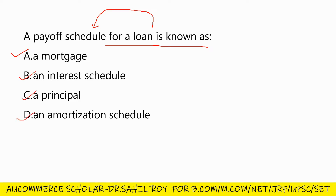The answer is: a payment schedule for a loan is known as an amortization schedule. Option D is the correct answer for this question.